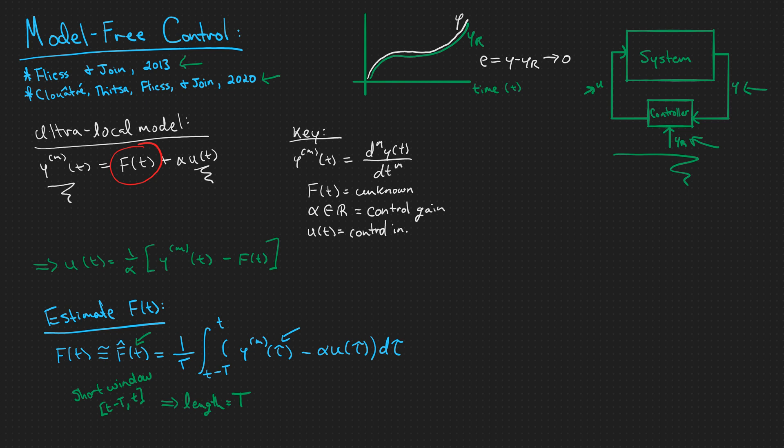So one last thing to note is that if capital T goes to 0, f hat of t goes to f of t. And this is useful. That means the smaller we can cut this window down, the closer or the better approximation of f of t that we can get.